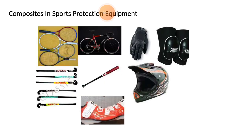The various sports equipment where composite materials are used are shown in the figure. These include a table tennis paddle, cycling equipment, hand gloves, pads, helmets, baseball gear, shoes, and hockey sticks. These are some examples of composites used in sports equipment. Thank you.